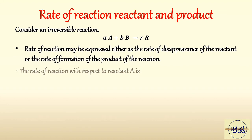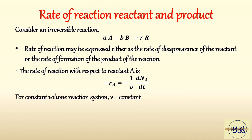The rate of disappearance of reactant A, that is the rate of reaction of reactant A, can be written as: minus rA equals minus one divided by V, dNA by dT. The minus sign represents that as the reaction proceeds, the number of moles of reactant A decreases. For a constant volume batch reactor, volume V is constant.